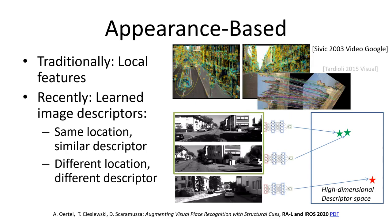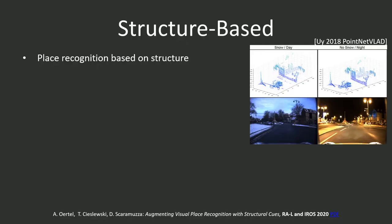But what if we didn't just use image matching for place recognition? A wide body of work exists which exploits the 3D structure of the environment to recognize places. Many of these approaches, however, require additional sensors such as lidars. In our work, we aim for relying on cameras only, which would be advantageous if we want to deploy our system on drones.